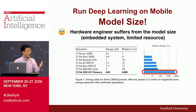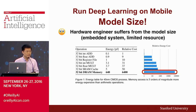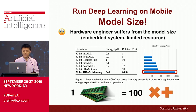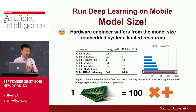Secondly, hardware engineers also suffer from model size because they care about battery life. We don't want our phone to die quickly running Deep Learning algorithms. For the new iOS 10, you have to be connected to the power supply when processing images. Seeing this chart, the majority of energy is consumed by memory reference — one memory reference costs more than 100 multiply-and-add operations. So we really want to reduce the model size to have less memory footprint and thus less energy consumption.